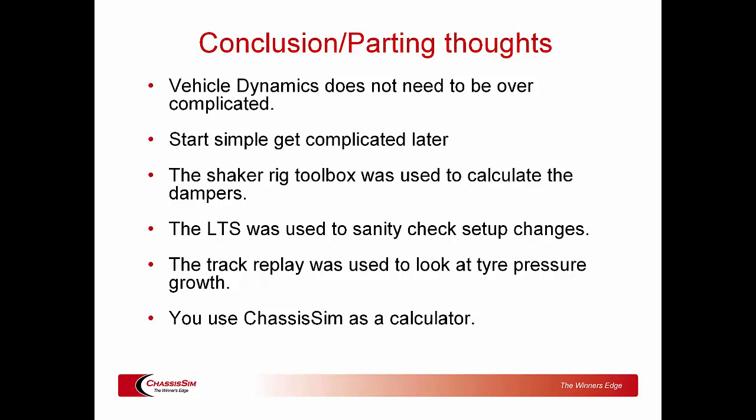In conclusion: vehicle dynamics does not need to be overcomplicated. The biggest trap I see with people using simulation is they get so locked up trying to get something down to the nearest 0.001 of a millimeter ride height correlation that they literally cannot see the forest through the trees. You start simple and get complicated later - very key. First things first: the Shaker Rig Toolbox calculates dampers, the lap time simulation sanity checks the setup, and the track replay looks at tire pressure graphs. Most importantly: use ChassisSim as a calculator, not a magic wand. If you use it as a calculator it will inform your instinct on the pit wall so you can make the appropriate calls. If you use it as a magic wand, you will be forever doomed to disappointment.